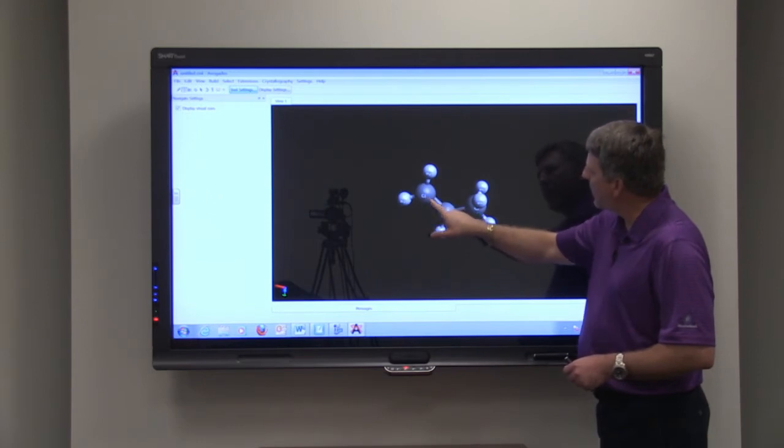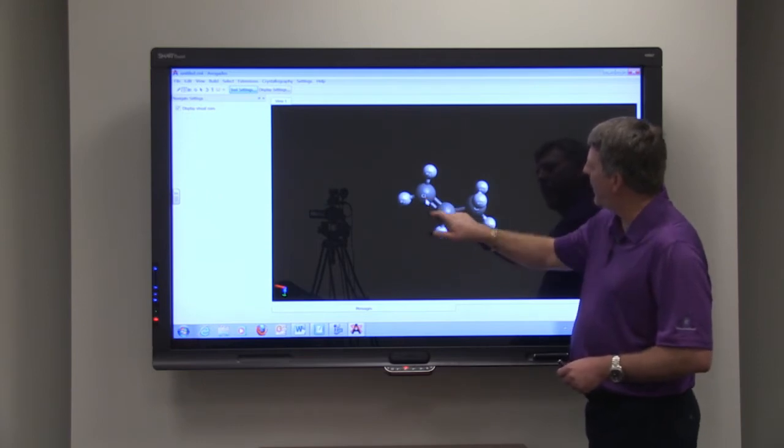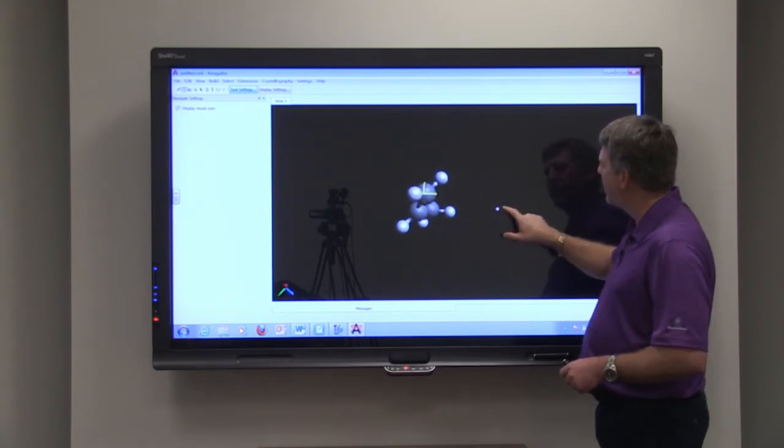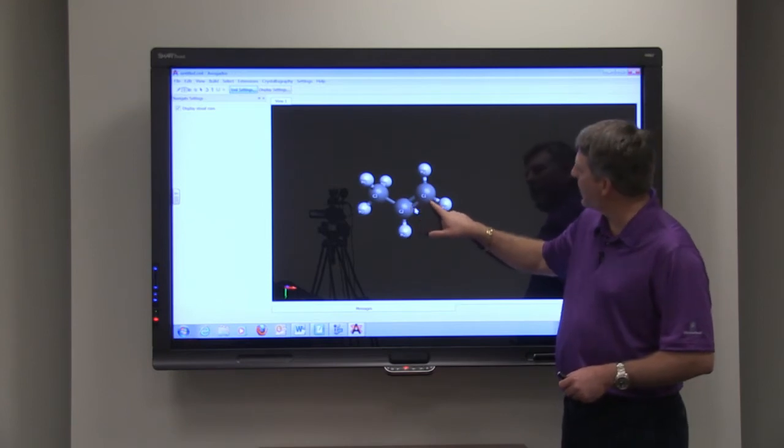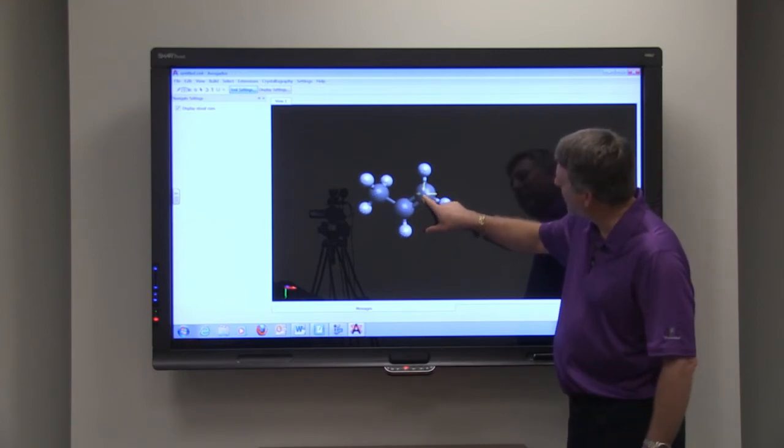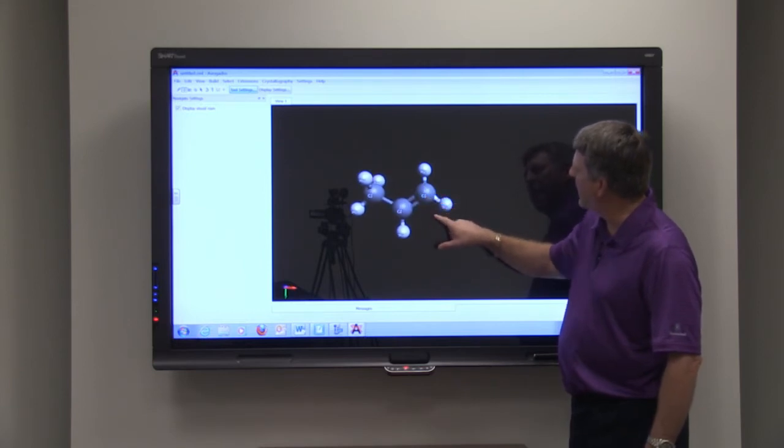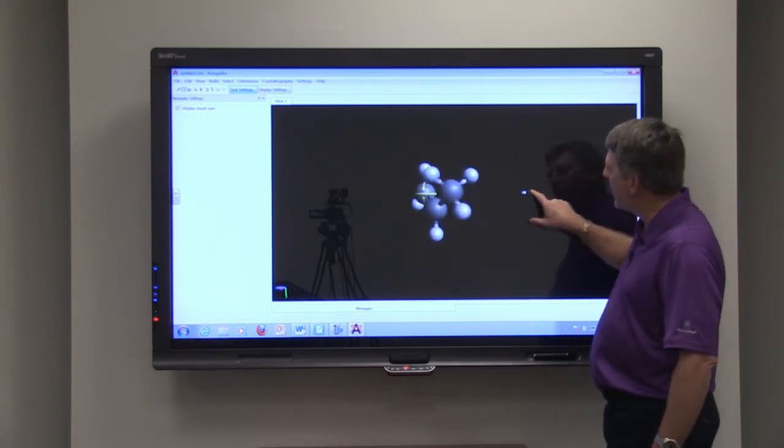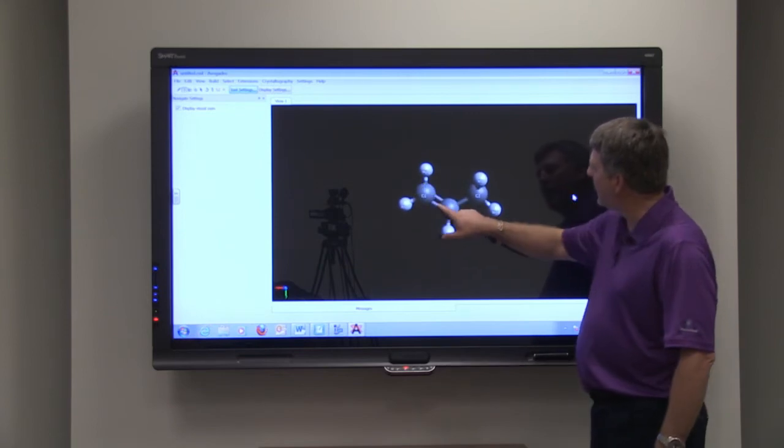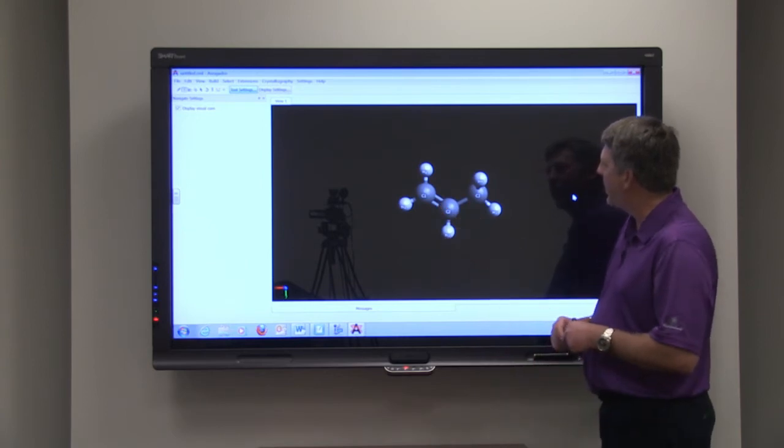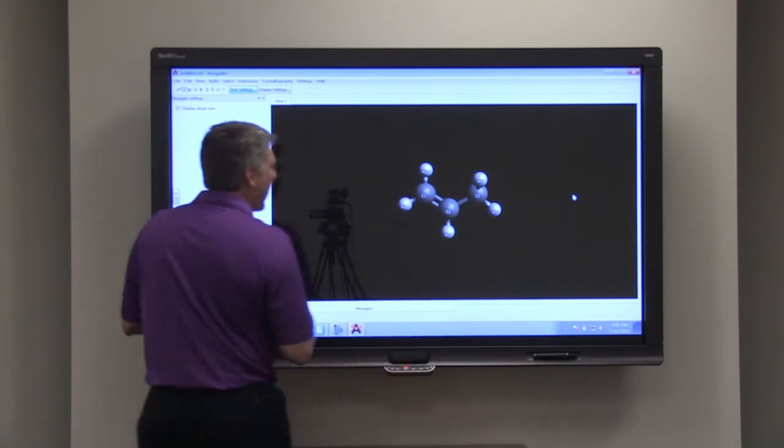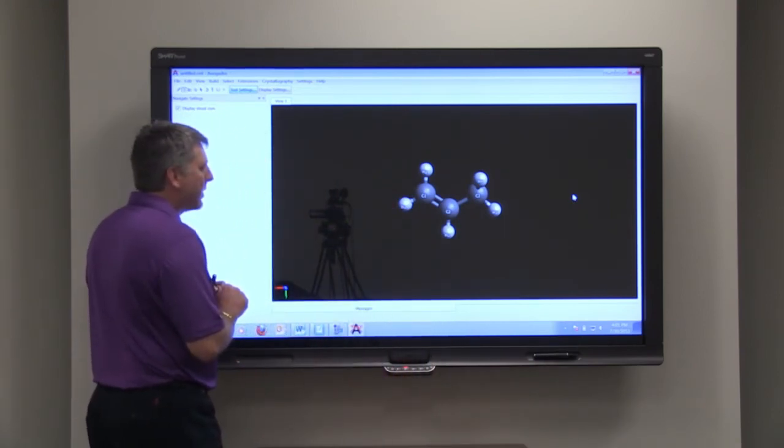But the double bond comes after the first carbon. And sometimes people get it confused and they think, well, this is an isomer because now the double bond is after the third carbon. But we always start the number closest to the double bond. So this is propene whether we look at it this way or whether we look at it this way, it's just flipping the molecule over. So propene has one double bond, and that one double bond is after the first carbon.